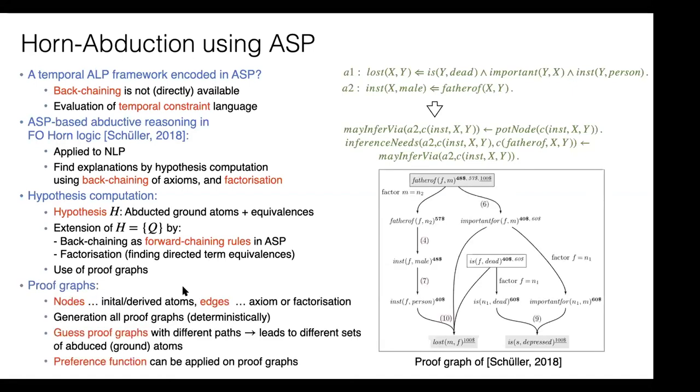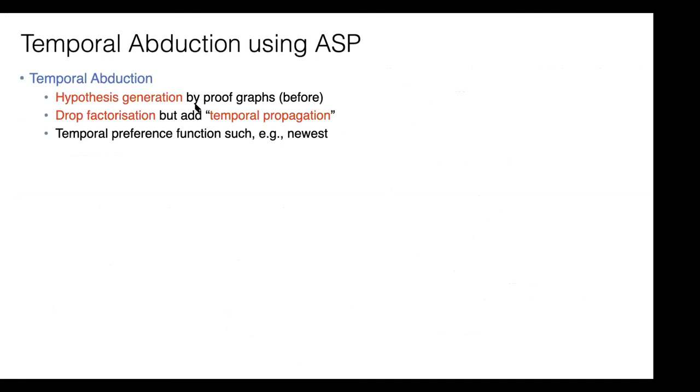The idea for proof graphs is that in the back-chaining step, we derive abduced answers. It's made of nodes which are initially derived atoms and edges which are axioms or factorizations. The encoding generates all possible proof graphs deterministically, then we can guess different proof graphs with different paths which leads to different sets of abduced ground atoms. This proof graph can be used to apply preference functions, for example applying costs to paths.